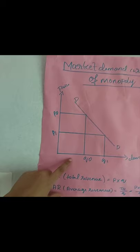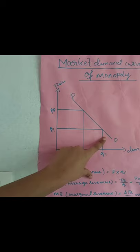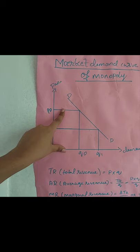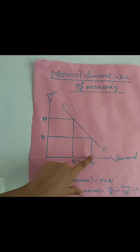The market demand curve is the same as the firm's demand curve. It slopes downward from left to right, meaning the monopolistic firm can sell less quantity at a high price and more quantity at a low price.